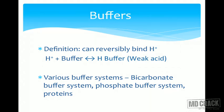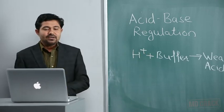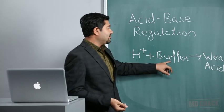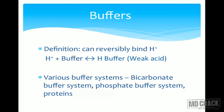A buffer combines with H+ ions to form H+ buffer, which is a weak acid that mostly remains in combined form. The various buffer systems include: the bicarbonate buffer system — the most important in extracellular fluid; the phosphate buffer system; the ammonia buffer system; and intracellularly, proteins act as good buffers. Hemoglobin, a protein in RBCs, also acts as a good buffer.